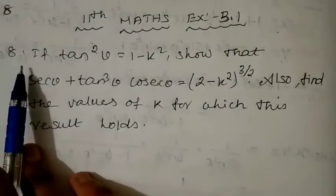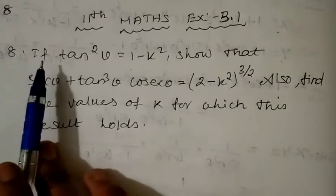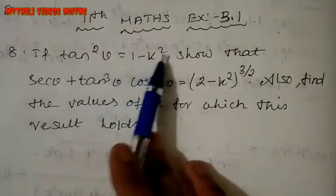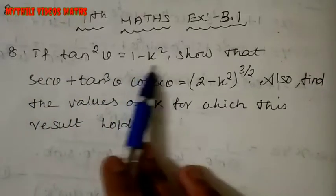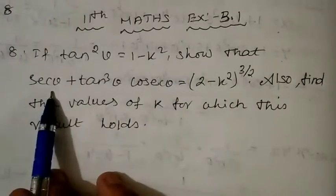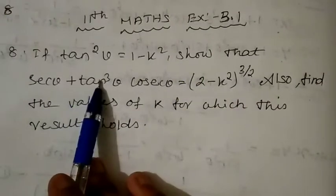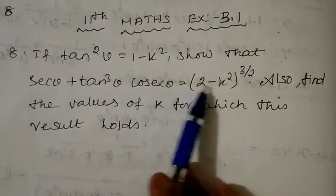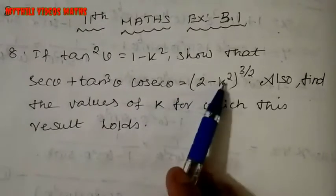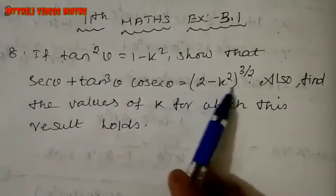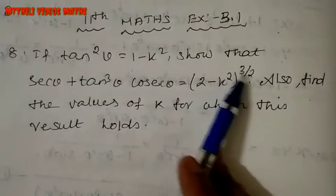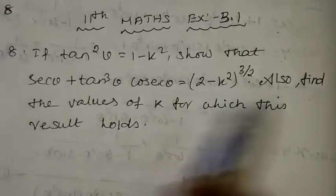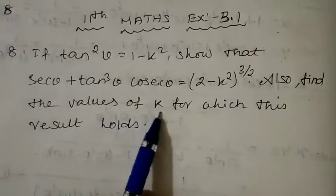If tan squared theta equals 1 minus k squared, show that secant theta plus tan cube theta cosecant theta equals (2 minus k squared) to the power 3 by 2. We will prove this to you, and also find the value of k.